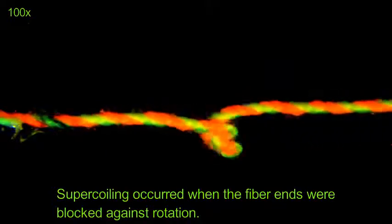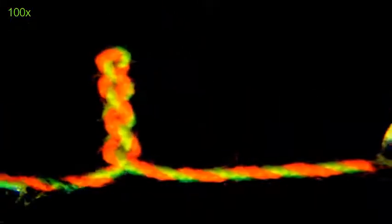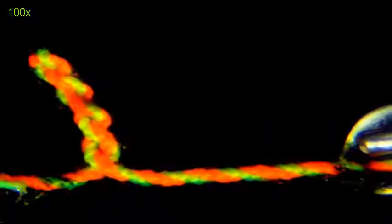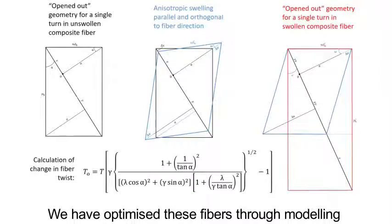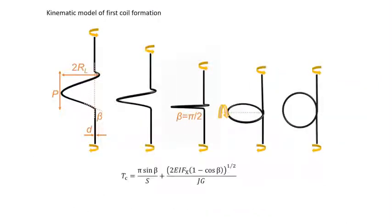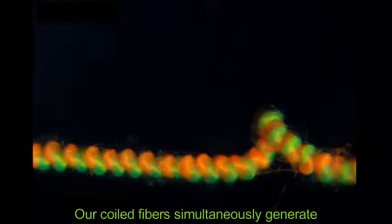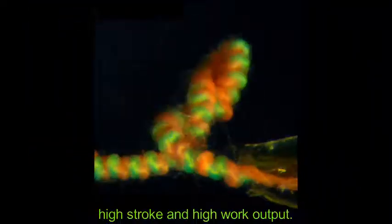Supercoiling occurred when the fibre ends were blocked against rotation. We have optimized these fibres through modeling to maximize stroke and work output. Our coiled fibres simultaneously generate high stroke and high work output.